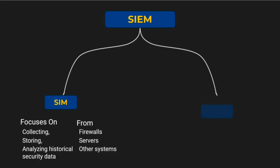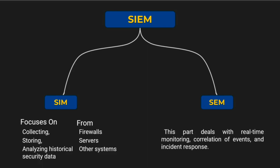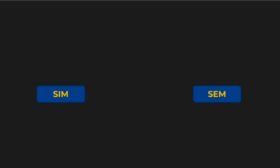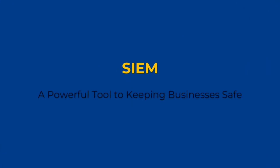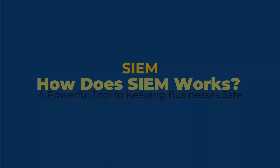The second component is Security Event Management, or SEM. This part deals with real-time monitoring, correlation of events, and incident response. When you put SIM and SEM together, you get SIEM — a powerful tool for keeping businesses safe in today's digital landscape.